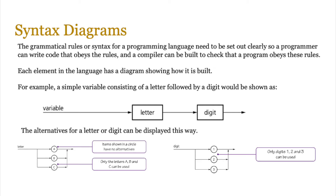Let's start by looking at syntax diagrams. These specify the grammatical rules for a programming language, and these need to be set out clearly so that the programmer can obey those rules and write code which is error-free. A compiler can be built to check that a program obeys these rules by comparing the tokenized code to what the syntax diagrams or the BNF form states. Each element in the language has a diagram showing how it is built. For example, on screen you see a simple variable can consist of a letter followed by a digit, shown as a rectangular box with a letter, followed by another rectangular box with a digit.